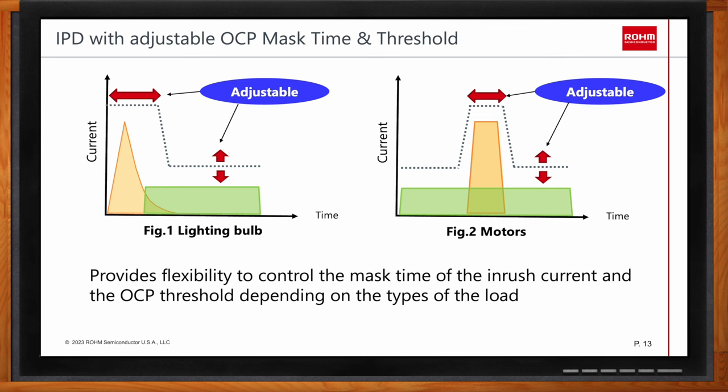There are two operating examples when A-OCP and adjustable OCP mask time are integrated in the IPD. The first is a capacitive load such as lighting valves: the inrush current is protected by the internal OCP, while current during normal operation is protected by the A-OCP. The second use case is motor loads: the adjustable OCP mask time provides effective protection not only against inrush current during IPD startup, but also against motor lock current.